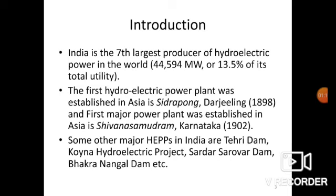The first hydroelectric power plant established in India is Sidra Pong at Darjeeling and Shiva Samundaram at Karnataka. Some other major hydroelectric power plants in India are Tehri Dam, Koyana Hydraulic Power Project, Sardar Sarovar Dam, Bakra Nangal, and many others.